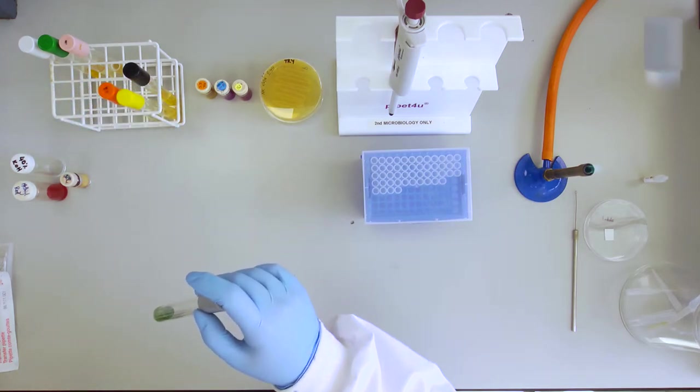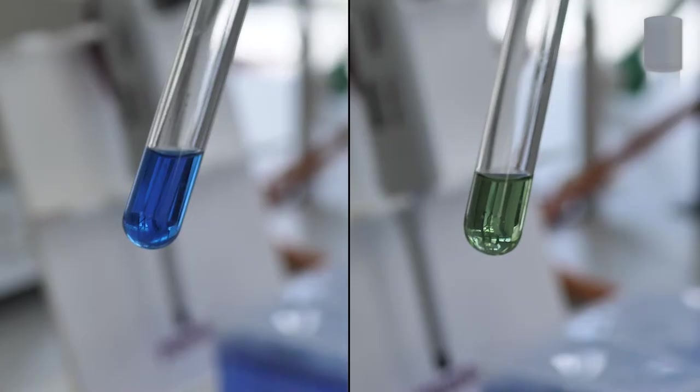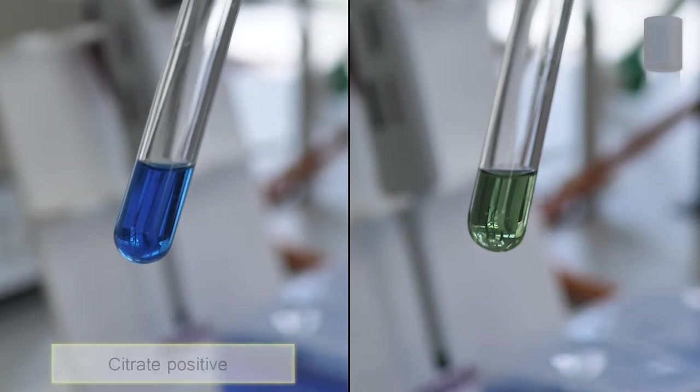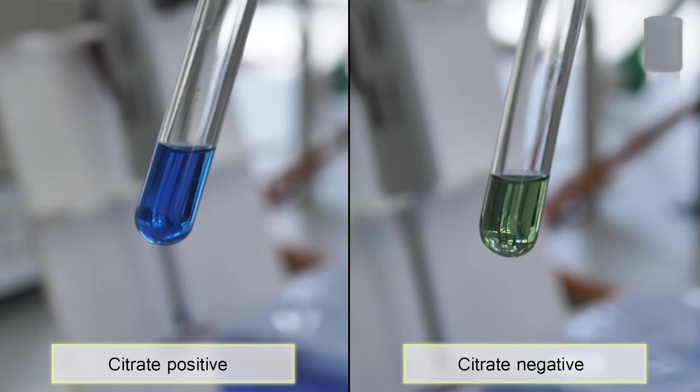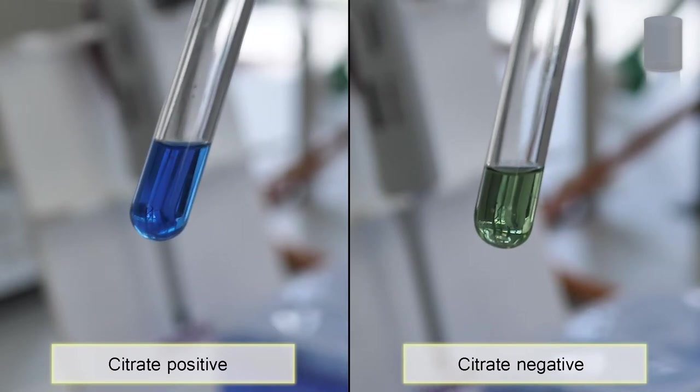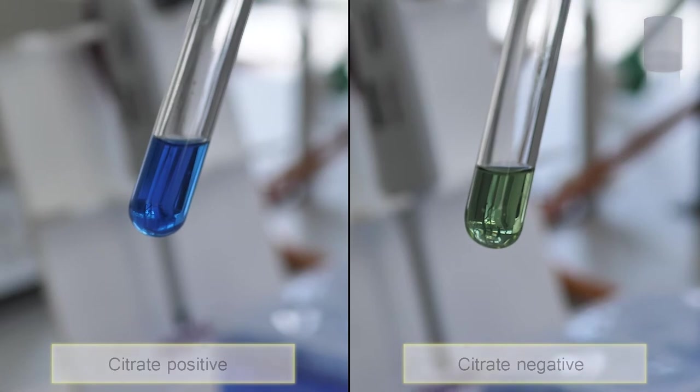The citrate utilisation test requires observation only. A green colour indicates citrate is not utilised. Whereas a blue colour indicates citrate has been utilised.